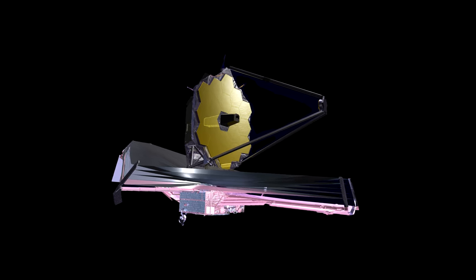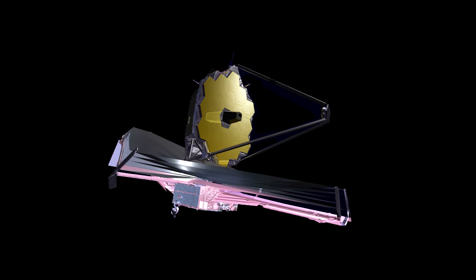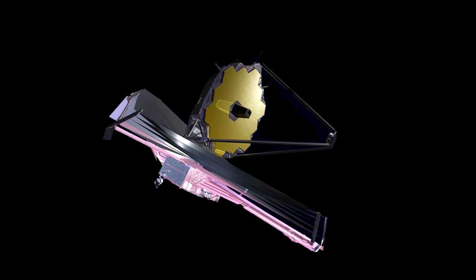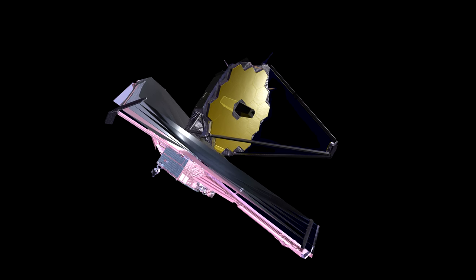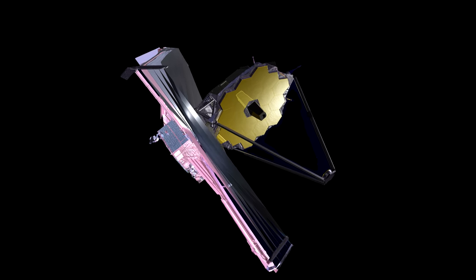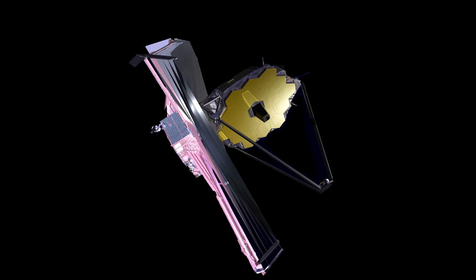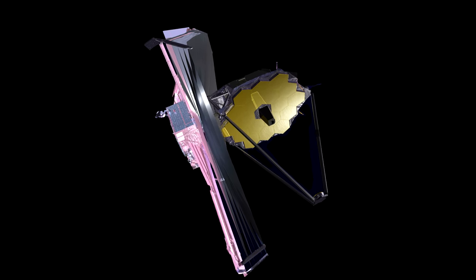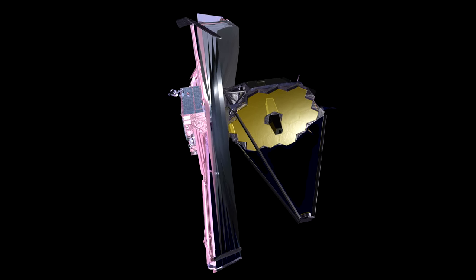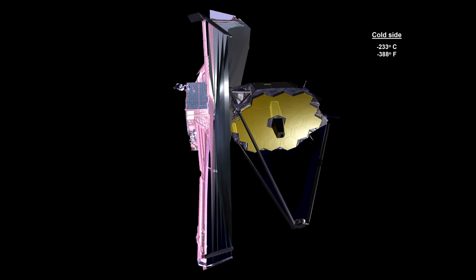The sunshield is particularly important because of the telescope's extreme sensitivity to heat. Webb primarily observes infrared light, which can sometimes be felt as heat. Because the telescope will be observing the very faint infrared signals of very distant objects, it needs to be shielded from any bright, hot sources. This also includes the telescope's own electronics equipment. It operates at 233 degrees below zero Celsius, that's minus 388 degrees Fahrenheit. That's cold enough to freeze nitrogen.